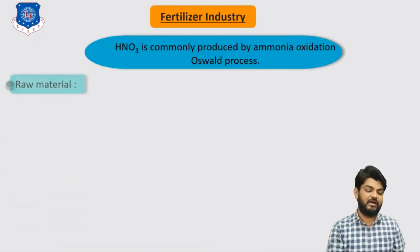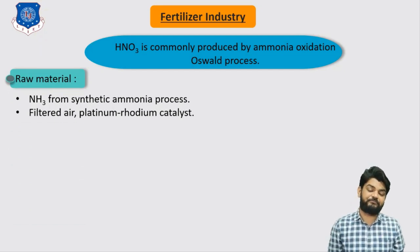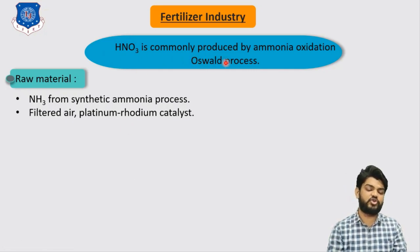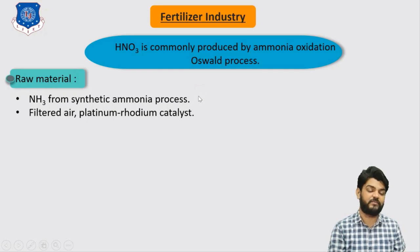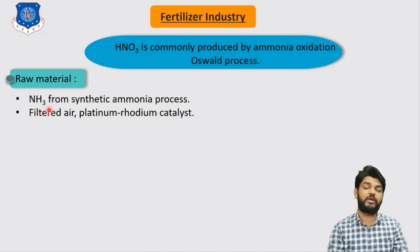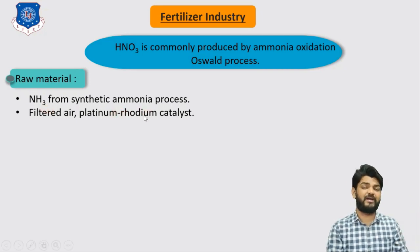The majority of nitric acid is produced by the Ostwald process — ammonia oxidation. Ammonia from the ammonia synthesis process is used as the raw material to manufacture HNO₃. Filtered air is required for oxidation and a platinum-rhodium catalyst is used to enhance the reaction rate, though this catalyst is very costly.